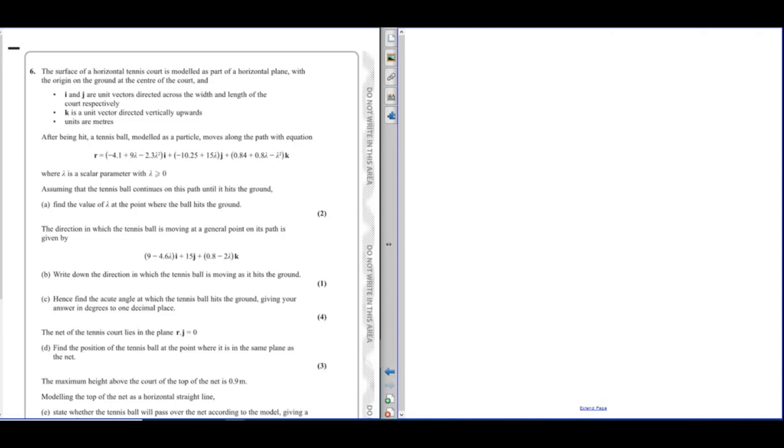First off, it wants us to find the value of lambda when the ball hits the ground. So look at what i, j, and k are in this case. So i and j are on the cart and k is vertically upwards. So this will hit the ground when the k component is equal to 0.